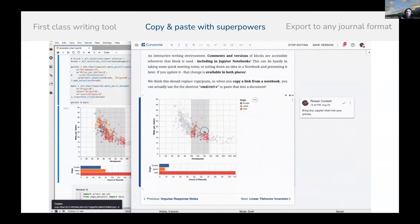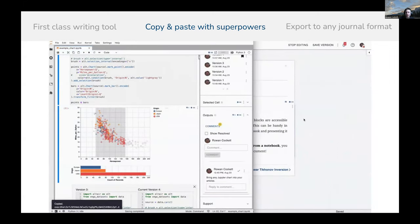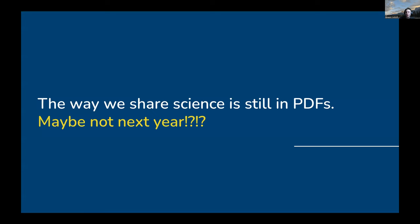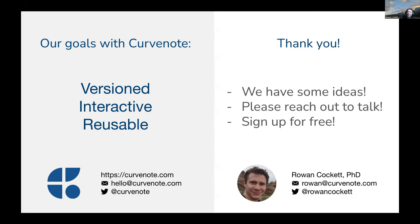Right now you can publish those rich documents directly online, or use those articles with a web-based schema to maintain semantic information and metadata, allowing CurveNote to export to about 350 journal templates and growing. Most of those are in PDF, because the way we share science is still in PDFs — but maybe not next year. Our vision at CurveNote is an easy-to-use tool that supports versions, interactive, reusable scientific content from meeting notes all the way through to manuscripts.